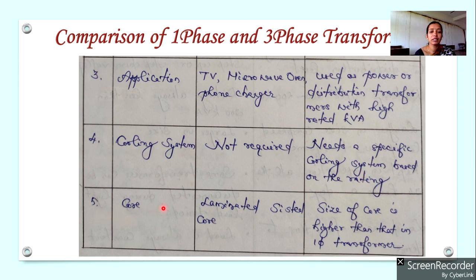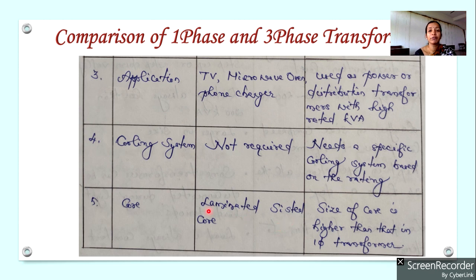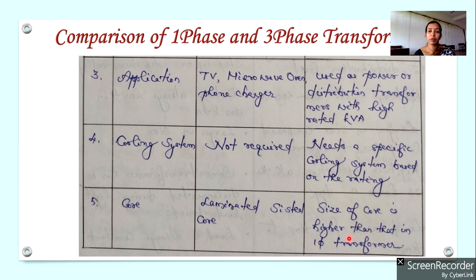Regarding the core: single phase transformers use a laminated silicon steel core. The core is laminated to reduce eddy current loss, and silicon steel is used to reduce hysteresis loss. Three phase transformers also use laminated silicon steel core, but the size of the core will be larger than that used for a single phase transformer.